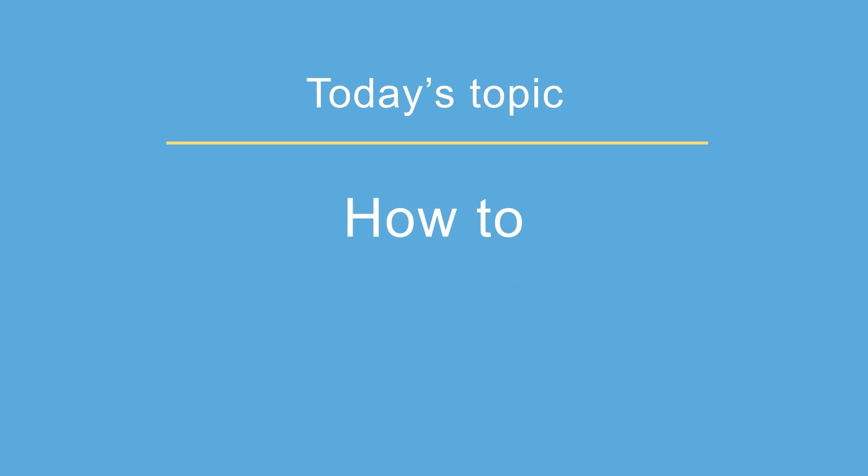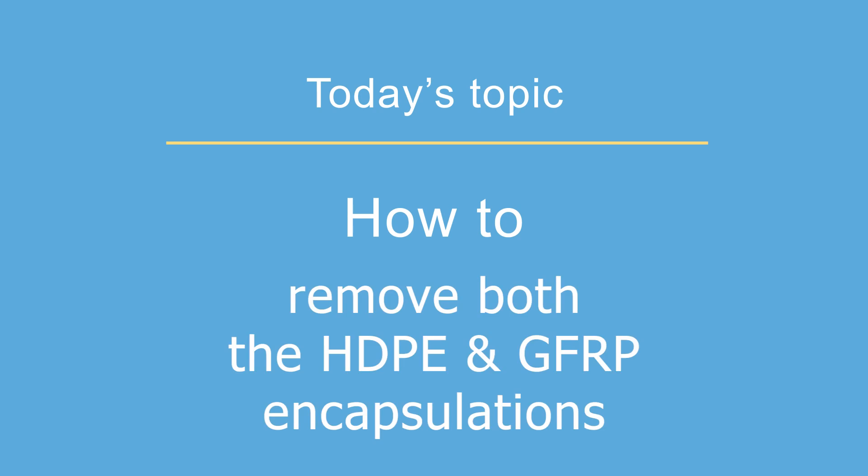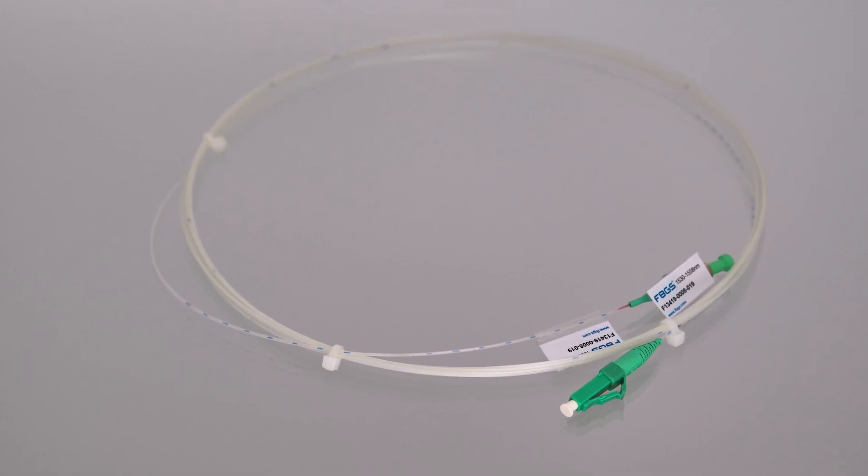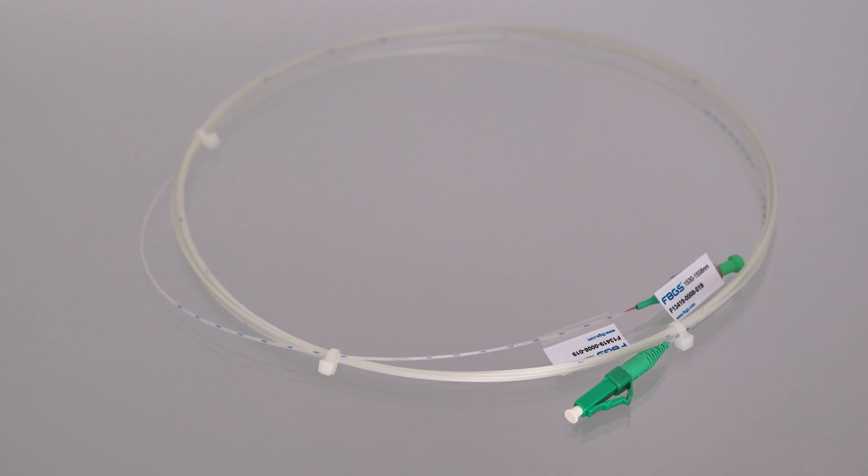Welcome to this tutorial on how to remove the HDPE and GFRP encapsulation layers. Fiber optic strain sensors from FBGS are suitable for harsh environments and can be embedded directly in materials like concrete.